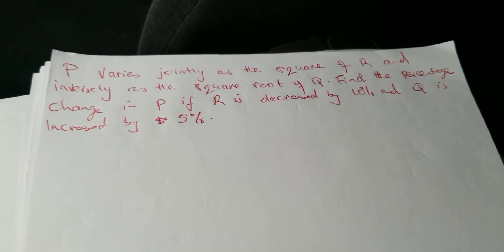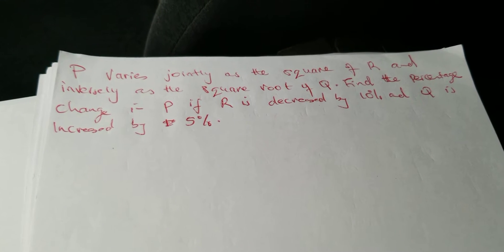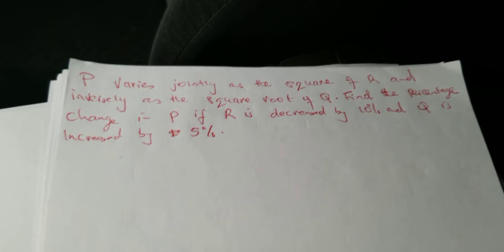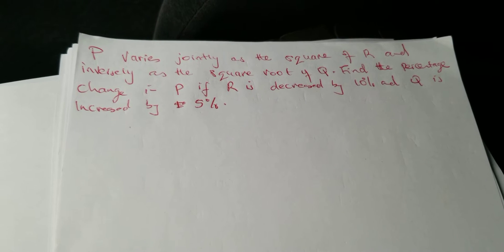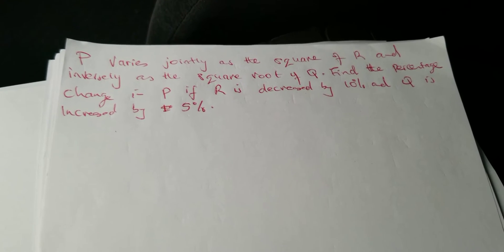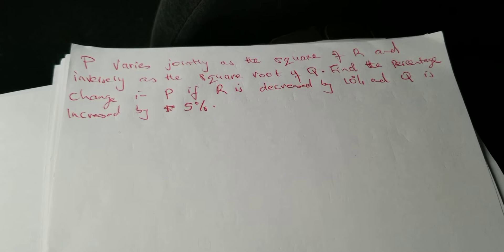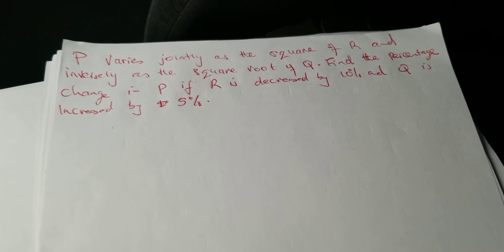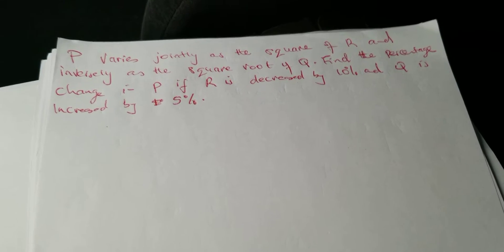So how do we go about this? First of all, you write the equation connecting P, Q, and R, and then you have to put a constant of proportionality, let's say K.